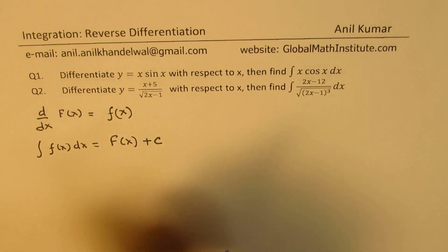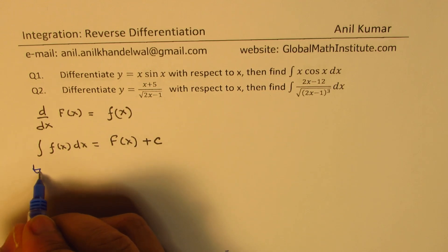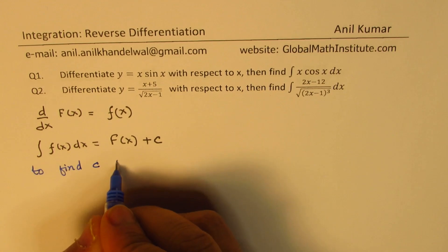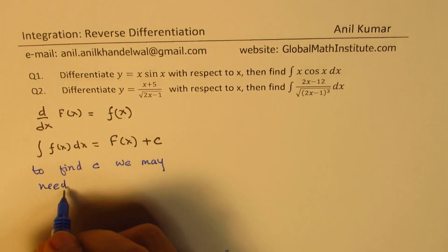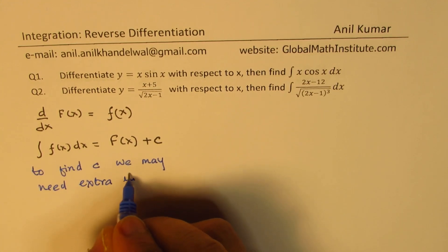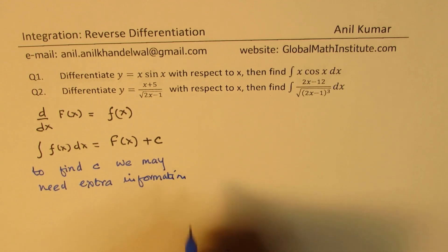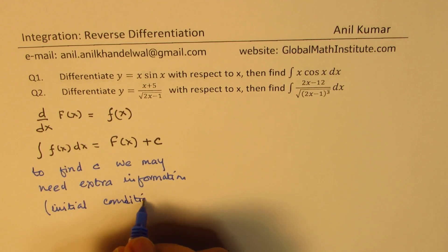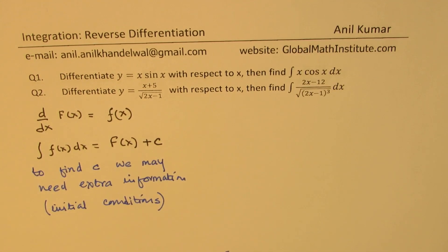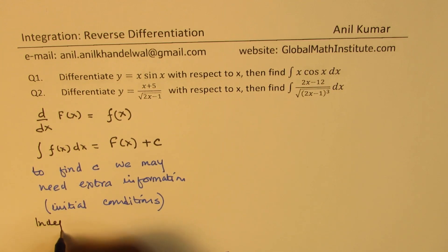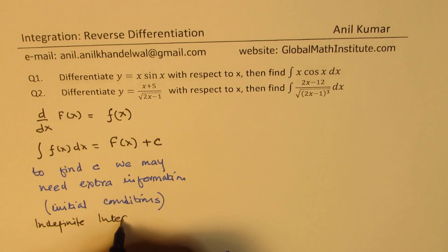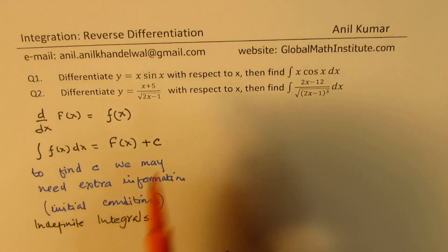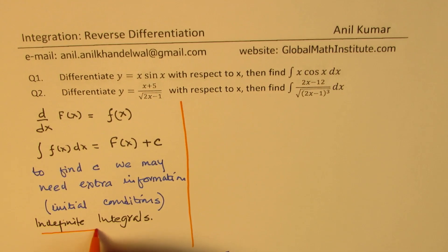Sometimes you are given initial conditions, so to find C we may need extra information — it is normally provided as initial conditions. That is what helps you to specifically get the integral of the given function. These are called indefinite integrals, and that is why the word 'indefinite' is used. Here's an example of an indefinite integral — this is important to understand as the basics.